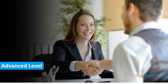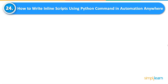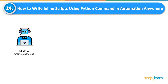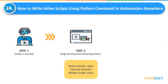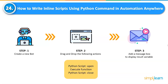Now let us look at some advanced-level Automation Anywhere interview questions. How to write inline scripts using the Python command in Automation Anywhere? Step 1: Create a new bot. Step 2: Drag and drop the following actions — Python Script Open, Execute Function, and Python Script Close. Finally, add a message box to display the result variable.